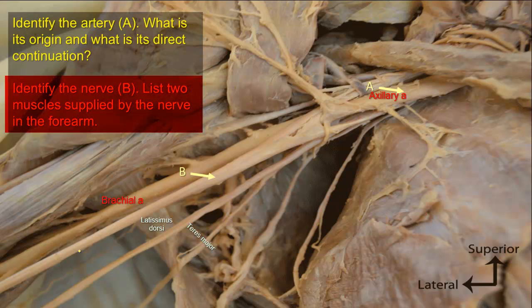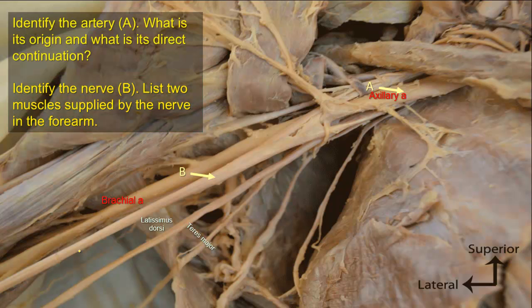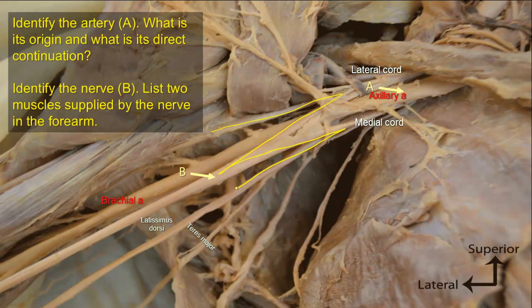Identify nerve B and list two muscles supplied by it in the forearm. To be oriented about the branches and cords of the brachial plexus, note that the cords are arranged according to their names around the second part of the axillary artery — the lateral cord, the medial cord, and the posterior cord (not shown as it is posterior to the artery). Try to find the capital letter M configuration, which gives a clue for the branches of the brachial plexus. This is the musculocutaneous nerve and these are the lateral and medial roots of the median nerve.